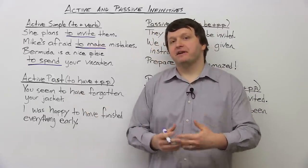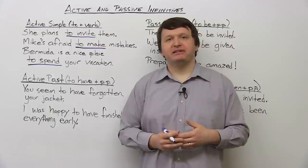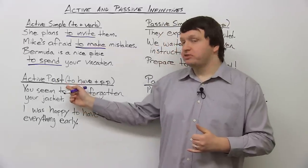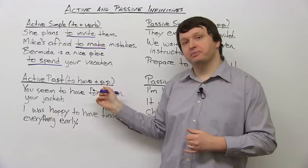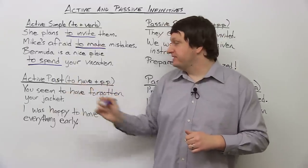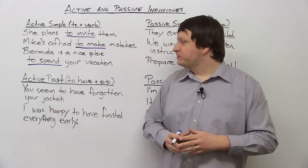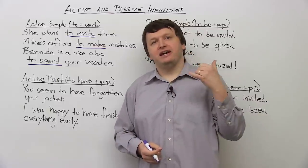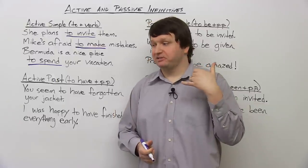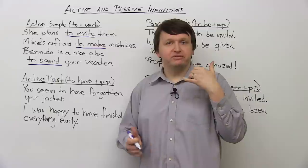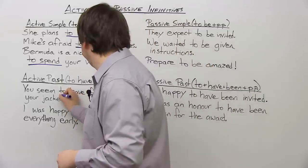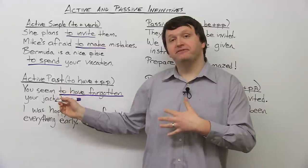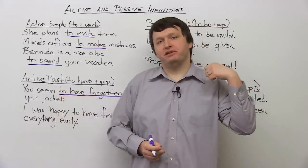Now here we have the active past. If you'd like to talk about an action that a subject did in the past and you have to use an infinitive, the structure you use is 'to have' plus the past participle. 'To have' is actually the infinitive in this sentence. For example: 'You seem to have forgotten your jacket.' I'm speaking to you in the present — you left my party two hours ago — and I say you seem to have forgotten your jacket in the past. 'Seem' is always followed by an infinitive, so you use the active past: to have plus past participle.